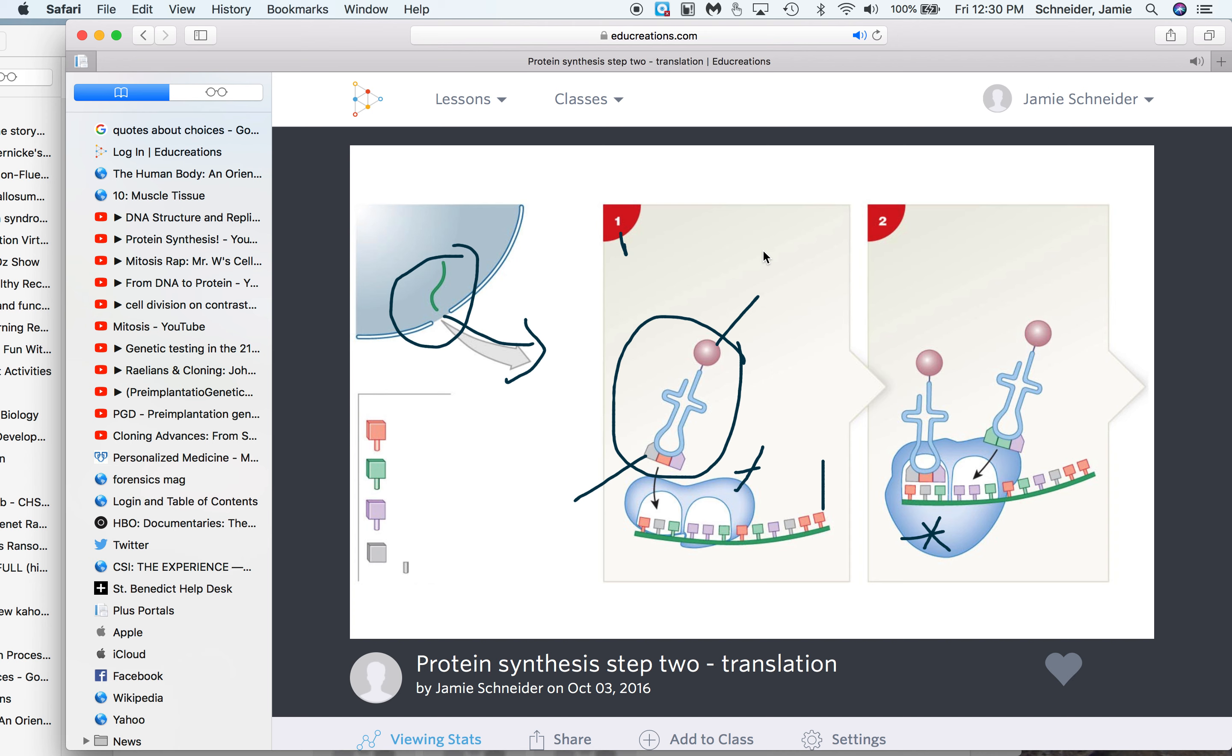The anticodon is the reverse of the codon on the mRNA, and that's what the tRNA is going to bind to on the mRNA. It's going to come and bind right there, once it binds right here where the arrow is.